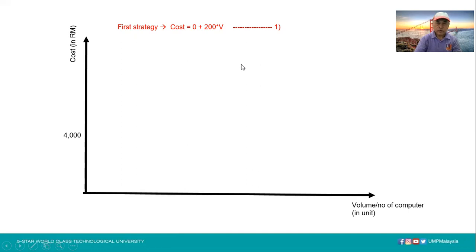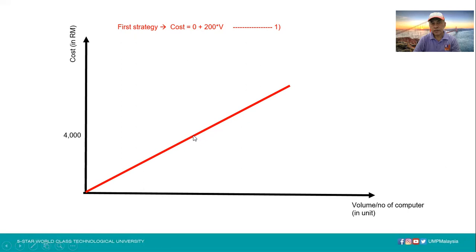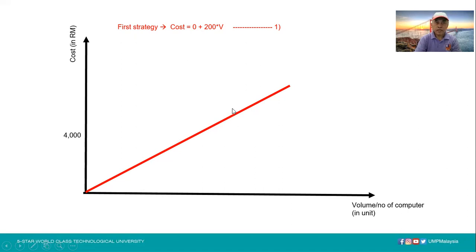From this equation, we can draw the first strategy on the chart, showing zero fixed cost with a slope of 200. This gives a straight line through the origin with a gradient of 200.